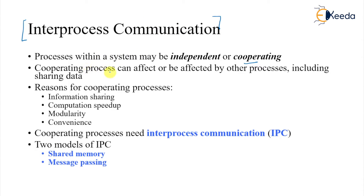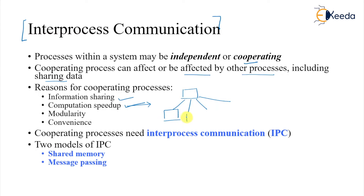Cooperating processes can affect or be affected by other processes, including sharing data. The reasons why we need cooperating processes include information sharing such as seat availability, computational speedup, and modularity — where you can create four different modules, each being part of a single application, and they communicate with each other to perform computation speedup. Convenience is another reason.